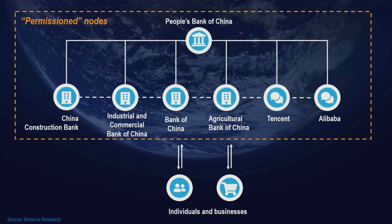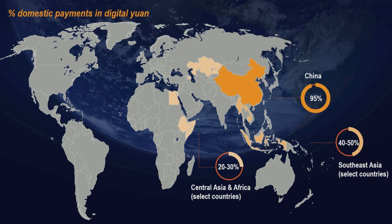The banks serve as nodes in a system, confirming and verifying users and transactions through a mutually understood protocol. All transactions are encrypted, and officials at the People's Bank of China have said they aim to strike a balance between anonymity and national security concerns. In our scenario, the digital yuan has taken off rapidly and represents 95% of all domestic payments in China. Retail customers have flocked to the currency because of its ease of use and reduced fees.